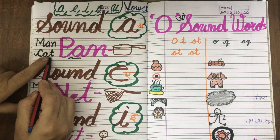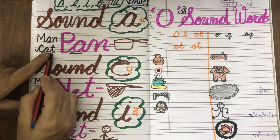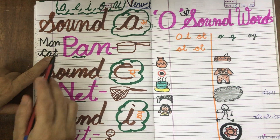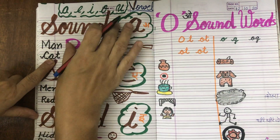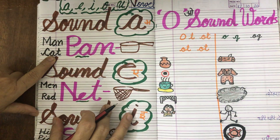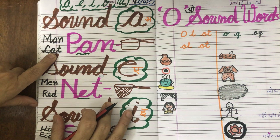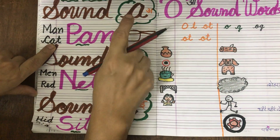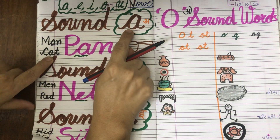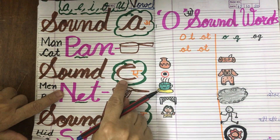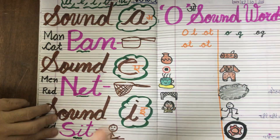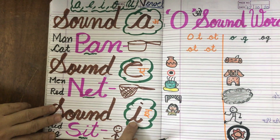Previous work bhi you will revise, otherwise you will forget. Sab bachye joh sounds ho chukye, us ko bhi daily revise karenghe. Sound A ke words likhoghe, sound E ke likhoghe, I ke likhoghe.